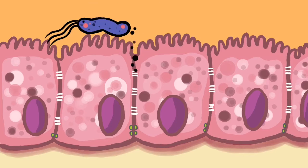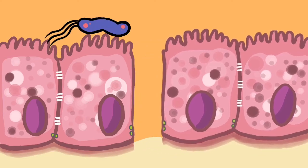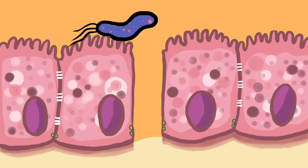She secretes protease to cleave the E-cadherin fence. And then, she did it! She finally accesses her new house in the bile duct epithelium.